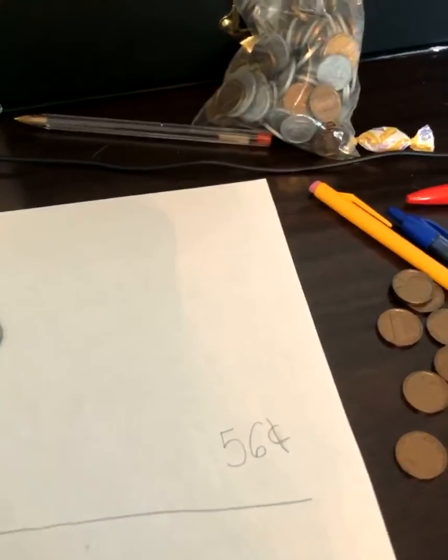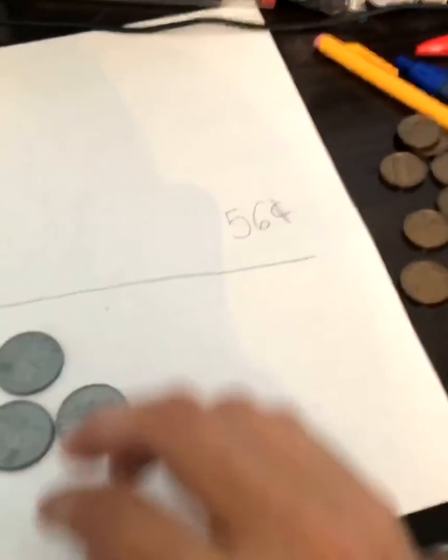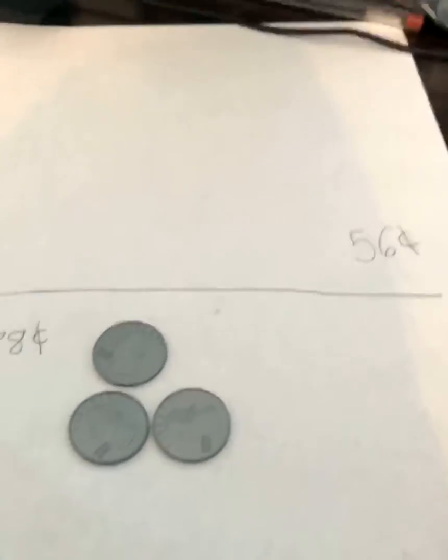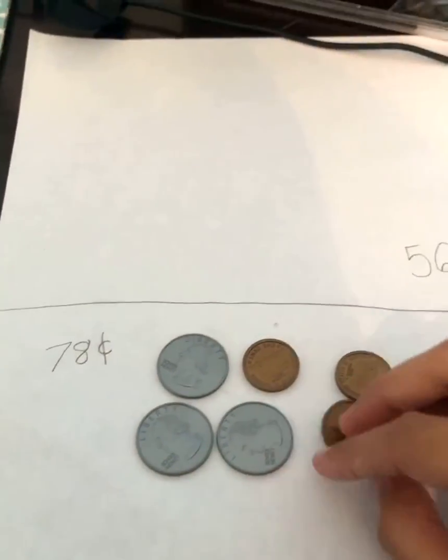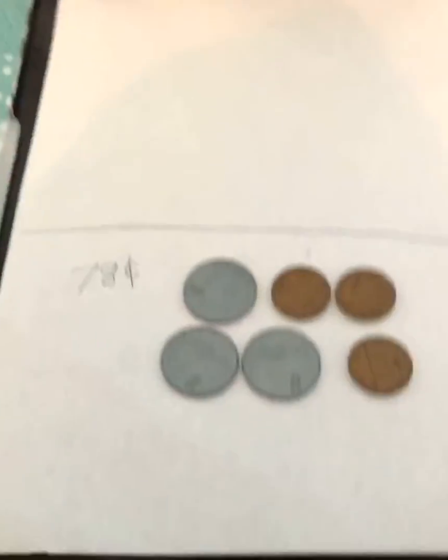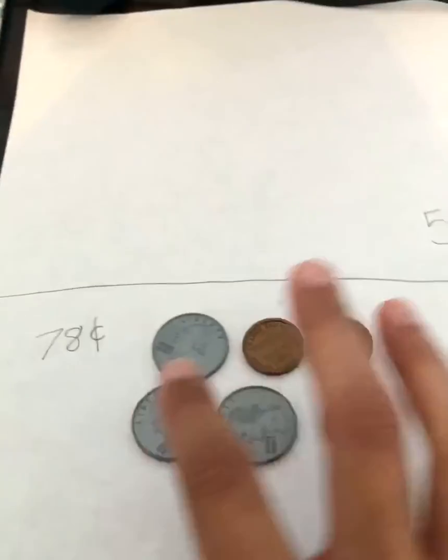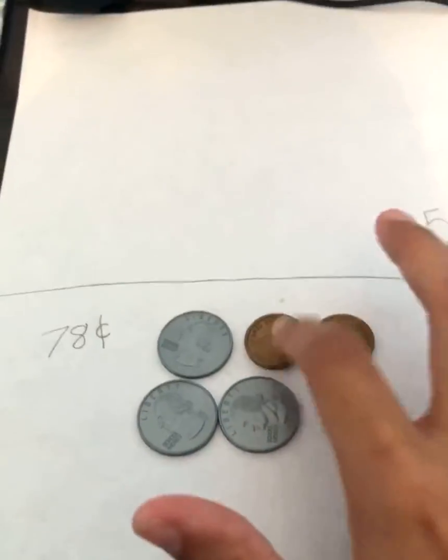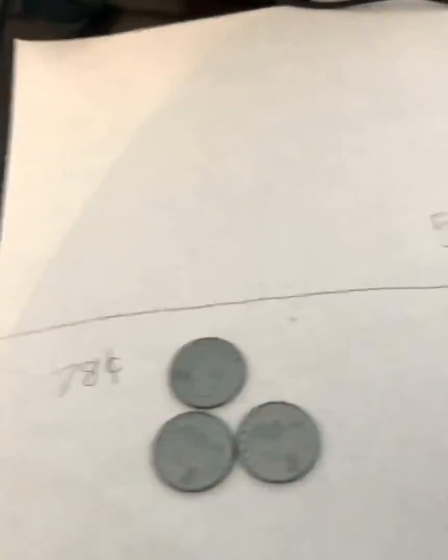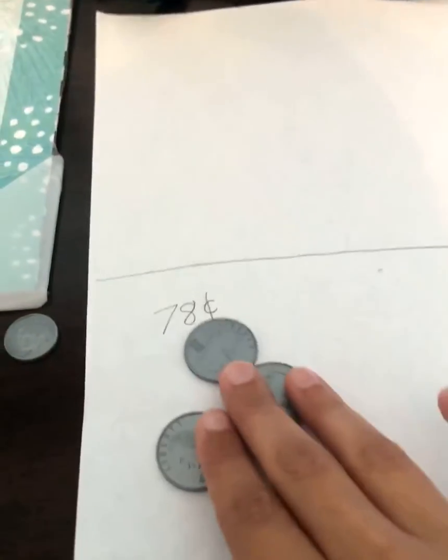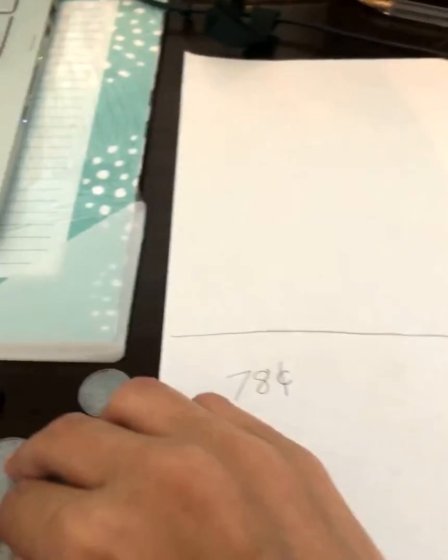We're going to try 78 next. I'm going to try with the quarters first. Three quarters makes 75. Now I'm going to get three pennies because three plus five equals eight. So now I have 25, 50, 75, 76, 77, 78. I have just made 78 using quarters and pennies.